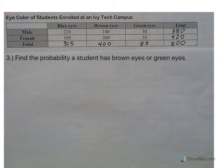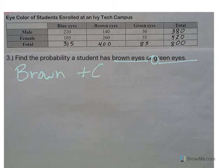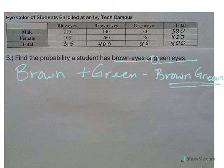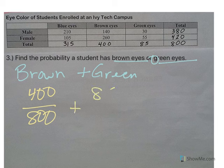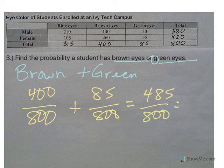Number three: find the probability a student has brown eyes or green eyes. Remember that 'or' means to add and subtract the overlap. The overlap would be brown AND green — but is it possible for a student to have both brown and green eyes? No, so that overlap is 0. Brown eyes is 400 out of 800, green eyes is 85 out of 800, so together we have 485 out of 800, which is over half — that gives 0.606.